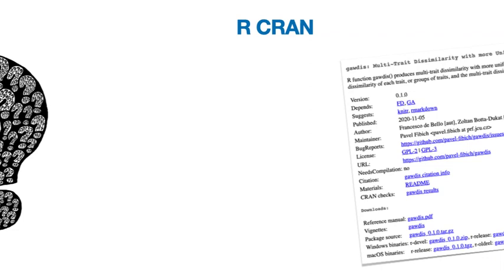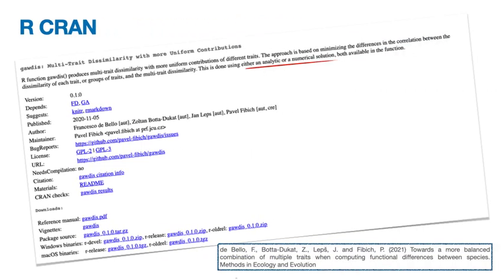This is exactly the task solved by the new R function Gaudis (with A), included in the Gaudis package on the R CRAN platform. The function is originally proposed by the paper by De Bello et al. in Methods in Ecology and Evolution in 2021. The function can solve this problem in two ways. The first is an analytical solution, where the function will provide a unique set of values for the argument w based on a mathematical solution. Unfortunately, this works only if there are no missing values in the trait data.